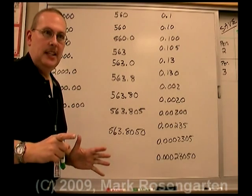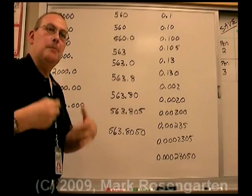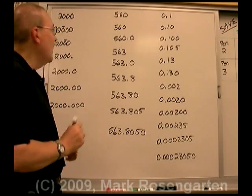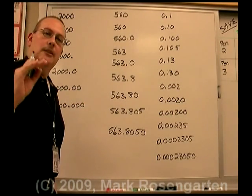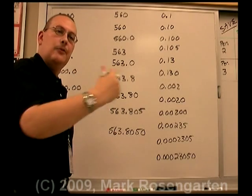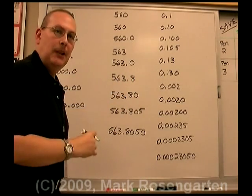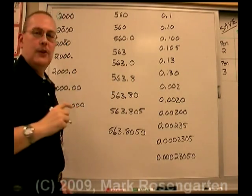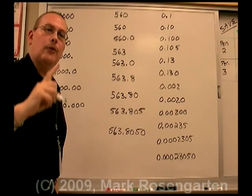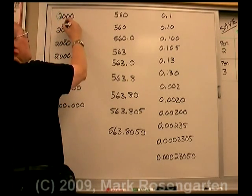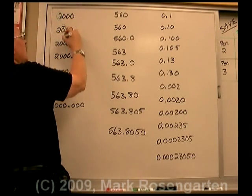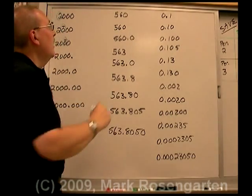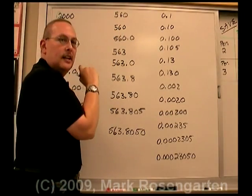If there is no decimal point in the number, then the precision — or the place the measurement was made to — is whichever integer is in the furthest right place, or if there's a line over a zero. If there's no decimal point, it's the final integer.